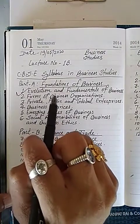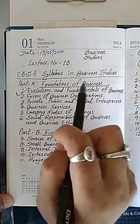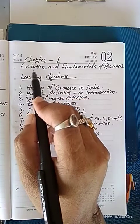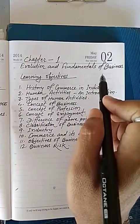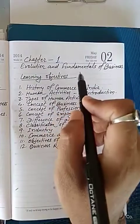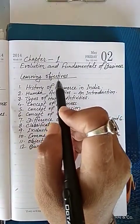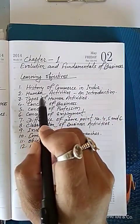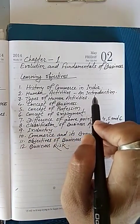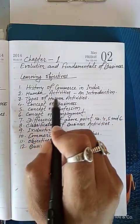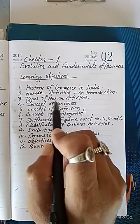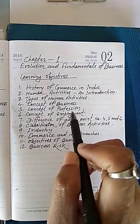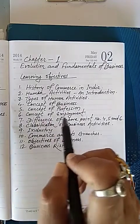The first chapter is Evolution and Fundamentals of Business. Under this chapter, the learning objectives are: first, history of commerce in India; second, human activity and introduction of human activity; third, types of human activities; fourth, concept of business; and fifth, concept of profession.